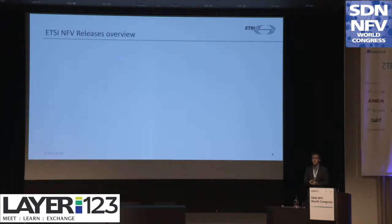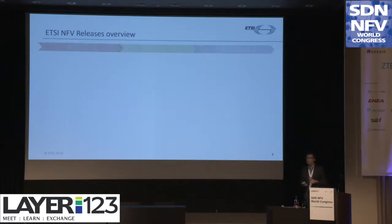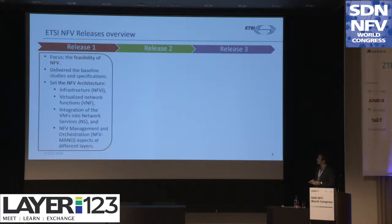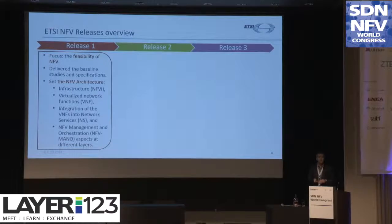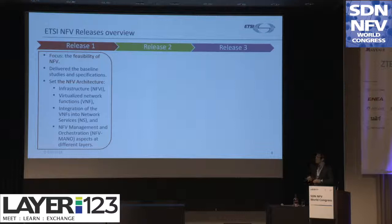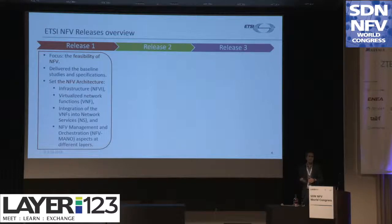The ETSI NFV first meeting took place in 2013. Since then, we have been splitting the work into releases. We started the first two years without identifying it as Release 1, because we were just focusing on checking the feasibility of NFV. We did a number of reports and specifications. The main outcome was the definition of the NFV architectural framework, identifying the main components: the infrastructure, virtualized network functions, abstractions and composition of NFs to create network services, and the management and orchestration entities — that's the NFV MANO.